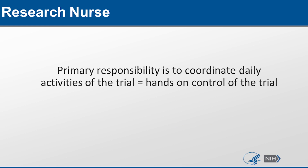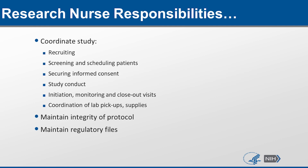The primary responsibility of a research nurse is to coordinate daily activities of the trial — hands-on control of the trial. Research nurses are basically the principal investigator's right hand. Responsibilities include coordinating the study, recruiting, screening and scheduling patients, securing informed consent, study conduct, initiation, monitoring and closeout visits, coordination of lab pickups, assisting with lab supplies, maintaining the integrity of the protocol, and maintaining regulatory files.